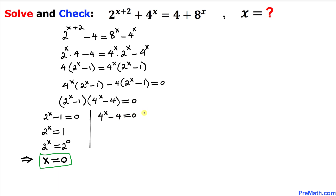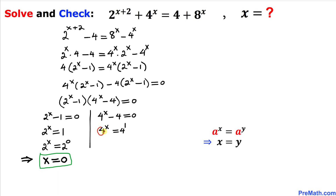Now let's focus on the second factor. Moving the negative 4 to the right-hand side gives us 4 power x equals to 4. This 4 on the right can be written as 4 power 1. Since the bases are the same, we apply the rule once again, and therefore x equals 1 is our other solution.